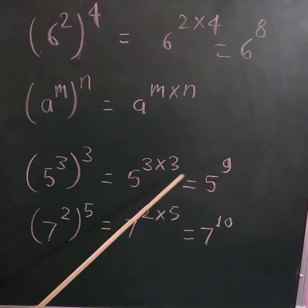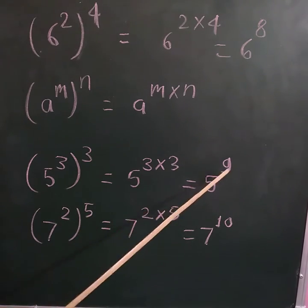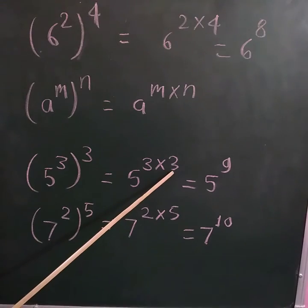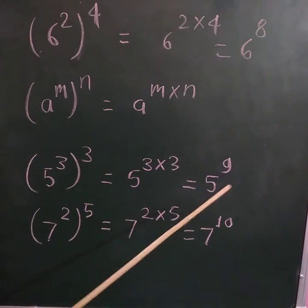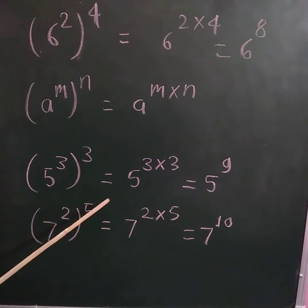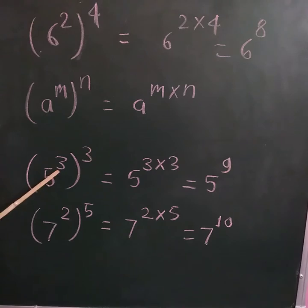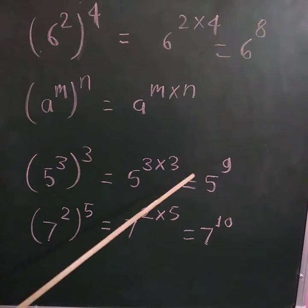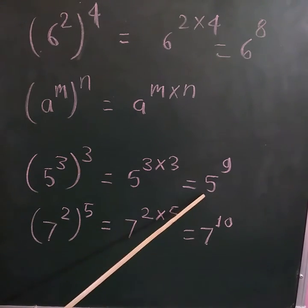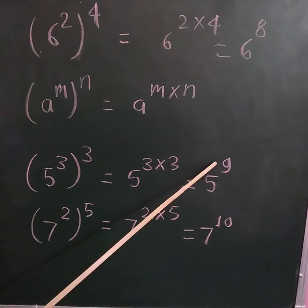3 multiplied by 3 is 9, so it is 5 raised to the power 3, whole raised to power 3, equal to 5 raised to the power 9.